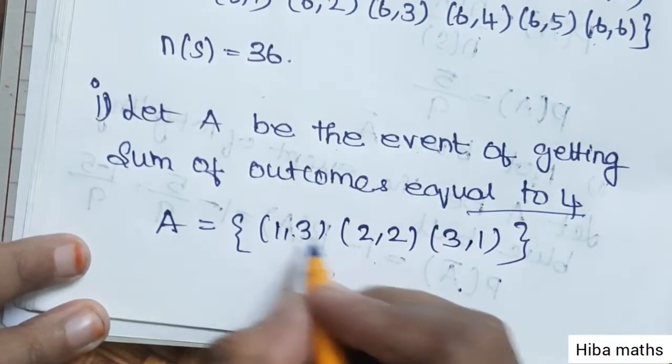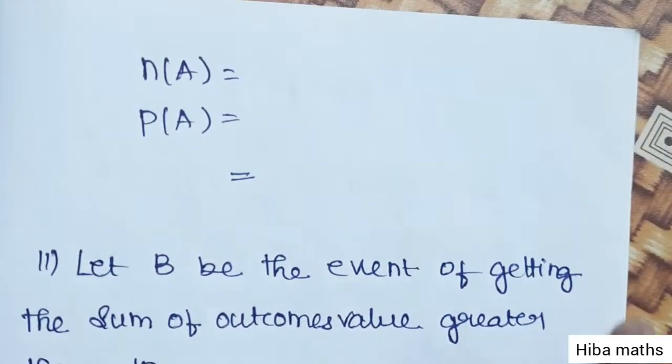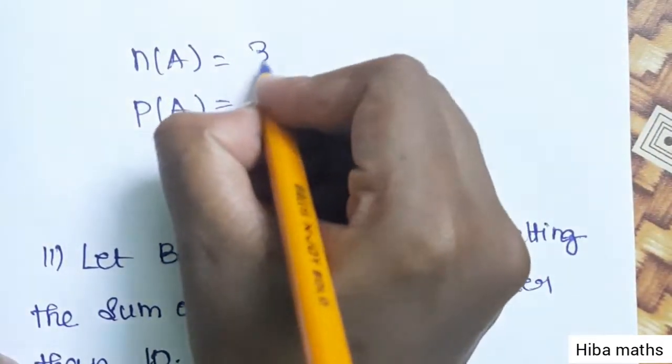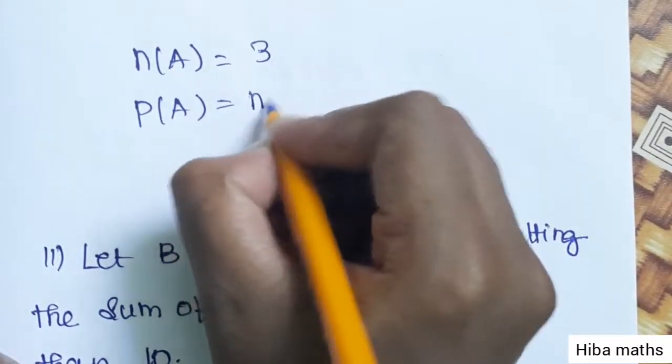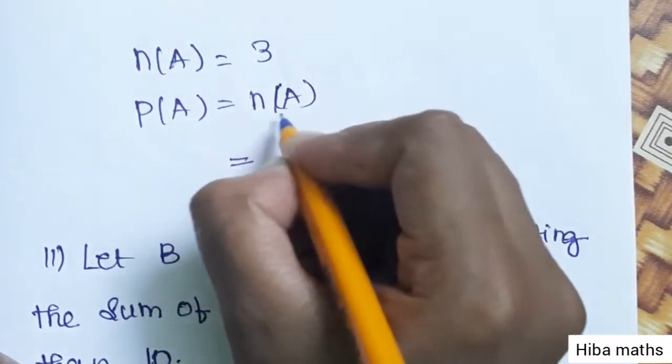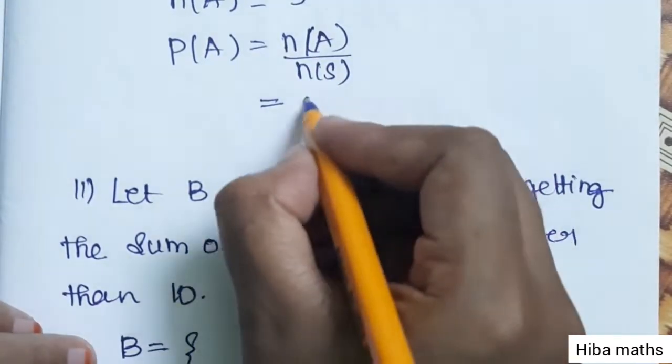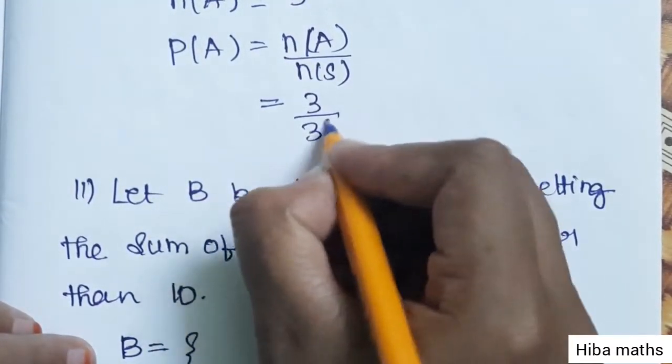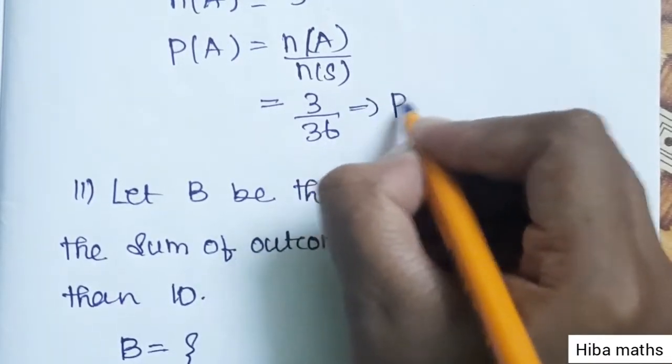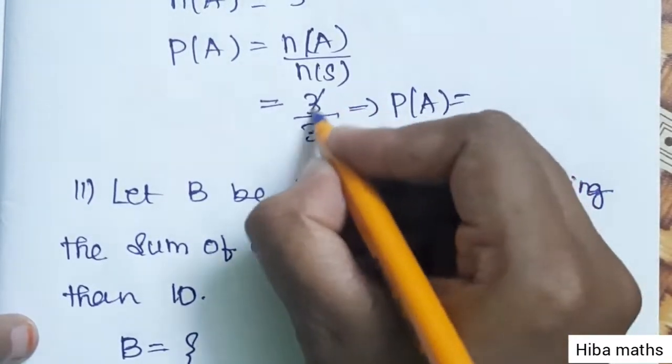Therefore n(A) = 3. P(A) = n(A) / n(S) = 3 / 36. Therefore P(A) = 1/12.